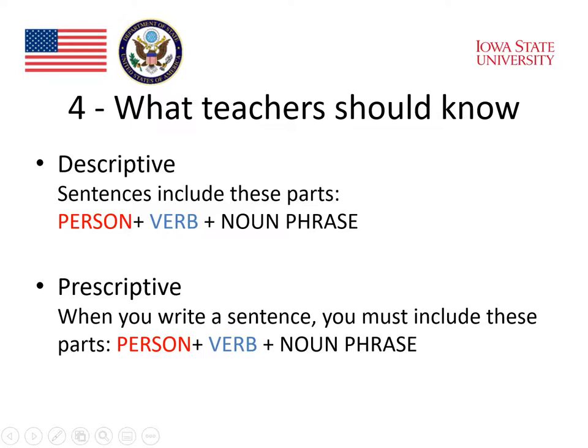In contrast, we often work with prescriptive grammar. Prescriptive rules are like this example: when you write a sentence, you must include these parts — a person, a verb, and a noun phrase. Prescriptive rules usually have the modal auxiliary 'must' or 'should' in them. They tell students what rules there are that they should be following.